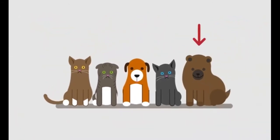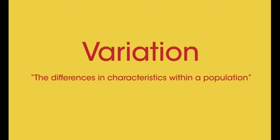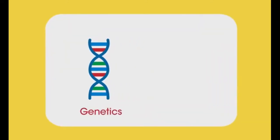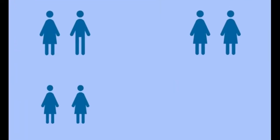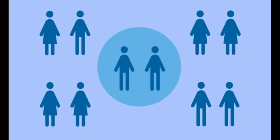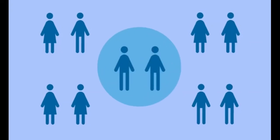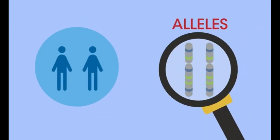One puppy is fluffier than the other. They have different colour fur and the kittens have different coloured eyes. Variation is the differences in the characteristics of individuals in a population. It can be due to genetics, the environment, or a combination of both. Different members of a population have different DNA, unless they are identical twins. This means they have different versions of genes called alleles, and these alleles give rise to different characteristics.